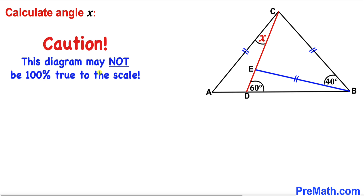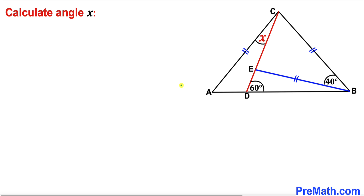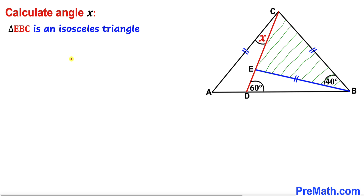Let me make it very clear that this figure may not be 100% true to the scale. Let's go ahead and get started. Here's our very first step: let's focus on this triangle EBC, and we know that this is an isosceles triangle since this side length is equal to this side length.